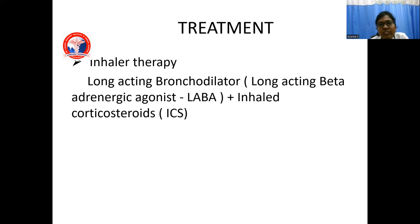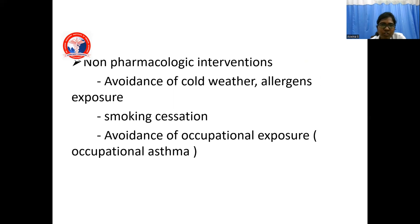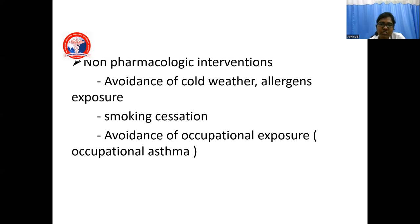Treatment of asthma: inhaler therapy with long-acting bronchodilators — long-acting beta-agonists with inhaled corticosteroids — is the main treatment for asthma. Any asthma patient needs inhaled corticosteroids as the main step; without that, airway inflammation will not resolve. A bronchodilator alone is not sufficient. Non-pharmacological interventions include avoidance of cold weather, allergens and triggers, smoking cessation, and avoidance of occupational exposure — especially for occupational asthma in workers exposed to paints, dyes, and certain industries.